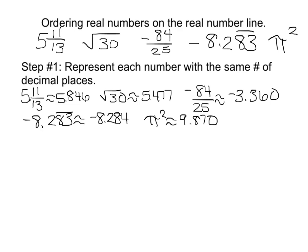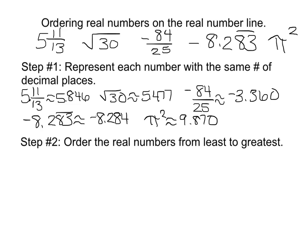Let's look at step 2. Step 2 is order the real numbers from least to greatest. So I need to start with my negative, so I see here that I have a negative 8, and that looks like it's my smallest negative, so that's where I'm going to start.